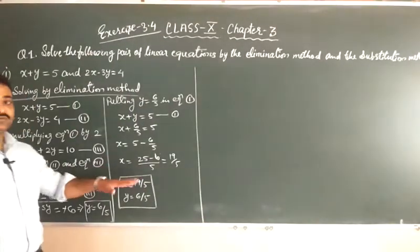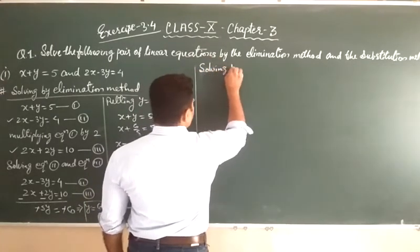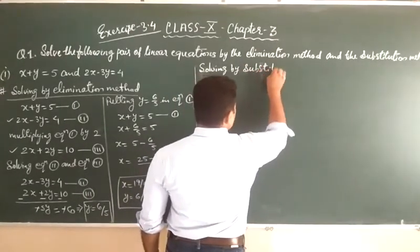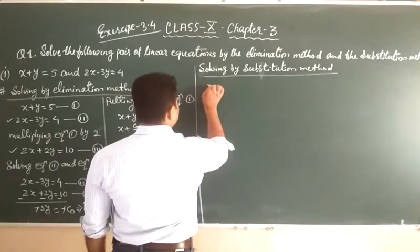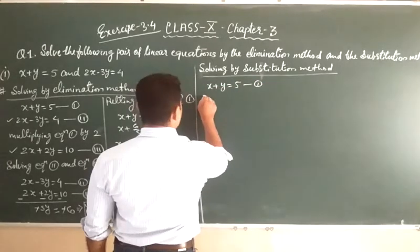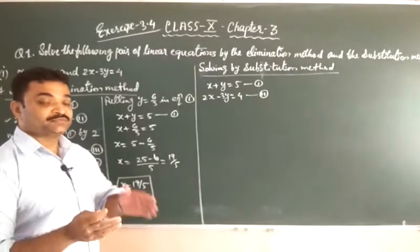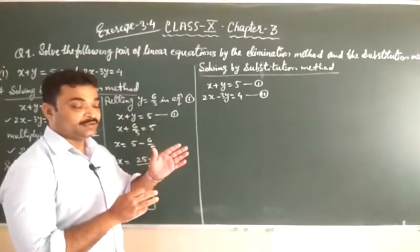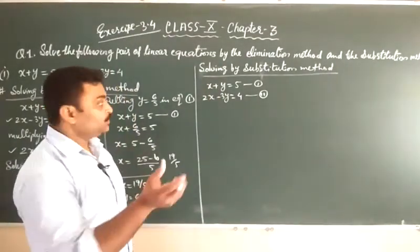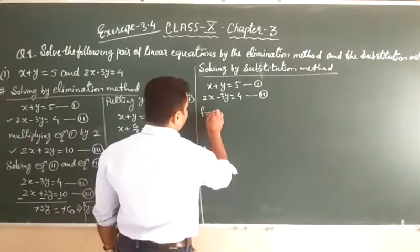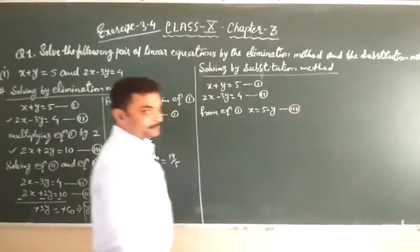Now, same question we will solve by the substitution method. Again we write the equations: x plus y is equal to 5 — equation number 1 — and 2x minus 3y is equal to 4 — equation number 2. In substitution method, what we do is we substitute the value of one variable in terms of the other — we find the value of one variable in terms of the other and put that value in the another equation. So from equation 1: x is equal to 5 minus y — this is equation number 3.